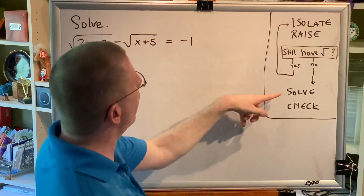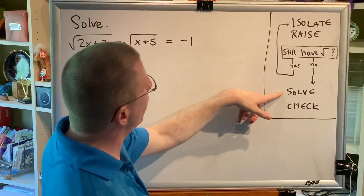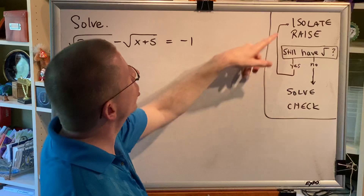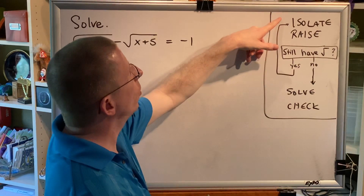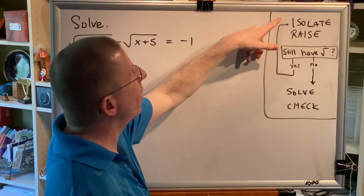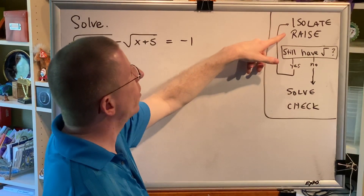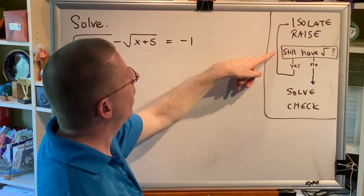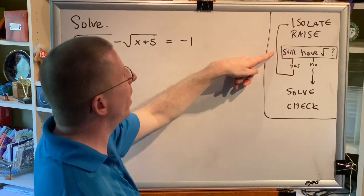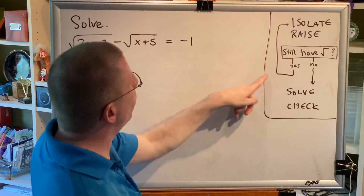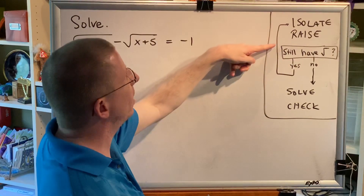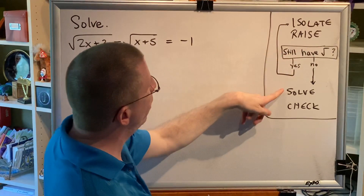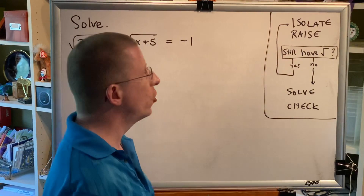However, in between the raise step and the solve step, there's a check for a radical. So: isolate one of the radicals on one side of the equation; raise both sides to a power that matches the index of the isolated radical; then, if you still have a radical in your equation, you must go back and isolate and raise again until there are no radicals. Once all the radicals are gone, then solve the equation and check.